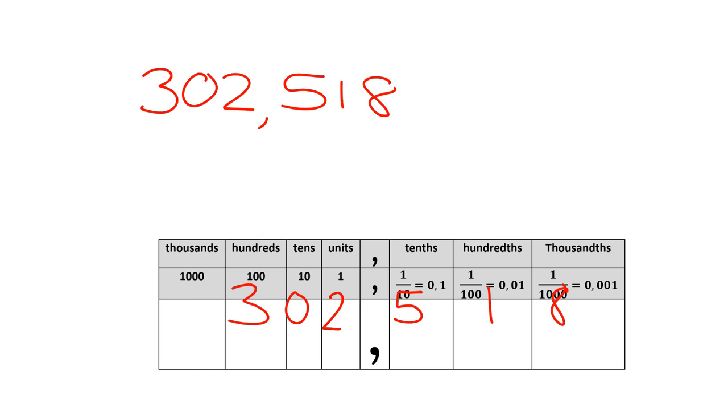Well the three just tells us we've got three hundreds, the zero no tens, the two we've got two units, the five in this place now to the right of the comma tells us we've got five tenths, tenths being one over ten which is the same as zero comma one.